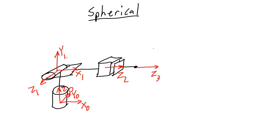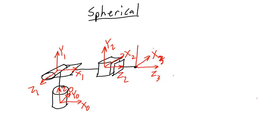For the 2 frame, x is again a free choice, so I'm going to make x go into the page. Following the right-hand rule: I point my thumb to the right (that's the z direction), my fingers going into the page, and my palm is pointing up — so y2 will be going up. For the 3 frame, I just copy the 2 frame, so x3 will be pointing into the page and y3 will be pointing up.